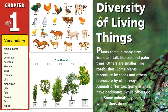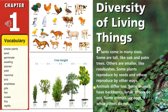Diversity of living things. Plants come in many sizes. Some are tall, like oak and palm trees. Others are smaller, like rose bushes. Some plants reproduce by seeds and others reproduce by other ways. Animals differ too. Some animals have backbones, while others do not. Some animals lay eggs, while others do not.